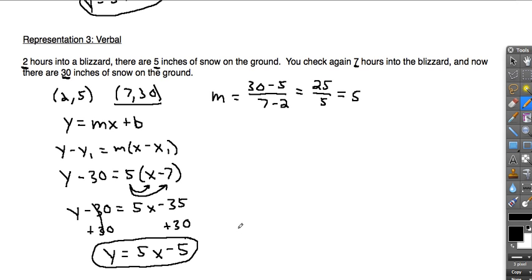So that is how you take information from three different representations, graphical, points, or verbal, and write it in slope-intercept form.